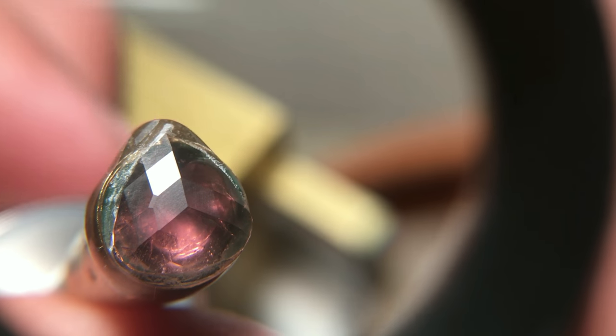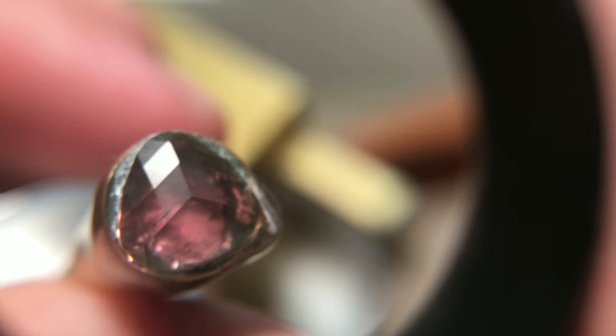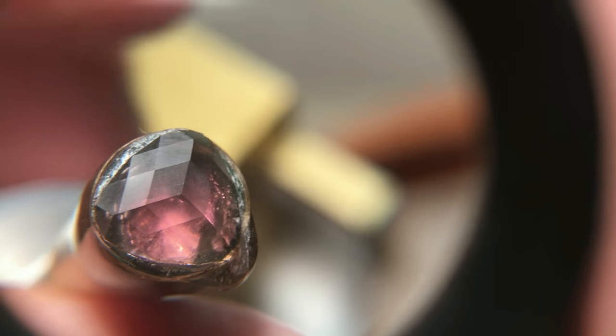To cut the crown, first we go over all the facets with a 600 grit lap, and then all over them again with the 3000 grit lap. That sequence pretty much gets you to the point where you can just go straight into polishing.